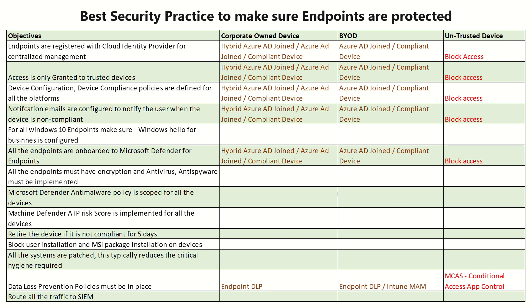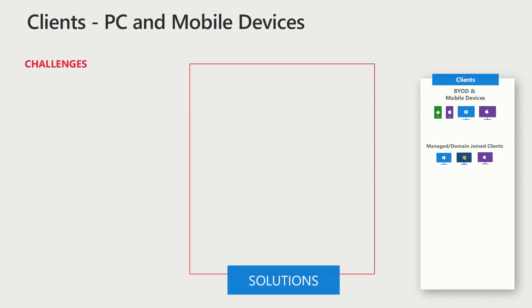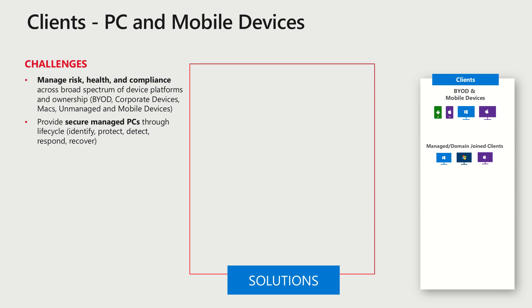Last but not least, route all traffic to your SIEM. For Microsoft's cloud-native SIEM solution, that can be Azure Sentinel, but you can use your own SIEM solution that makes intelligent correlation and alerts you about anomalies.